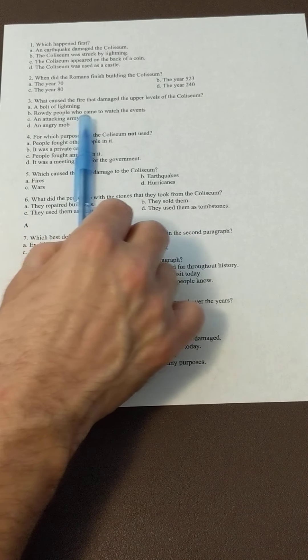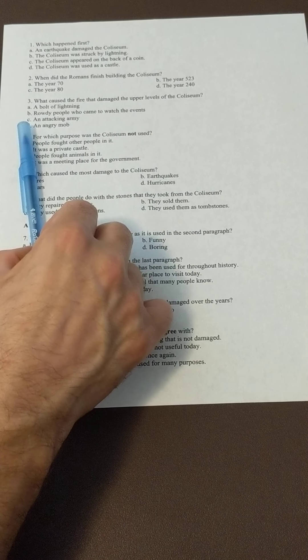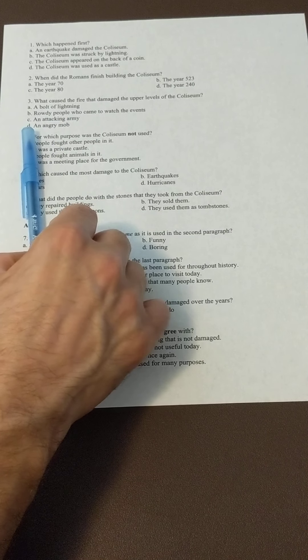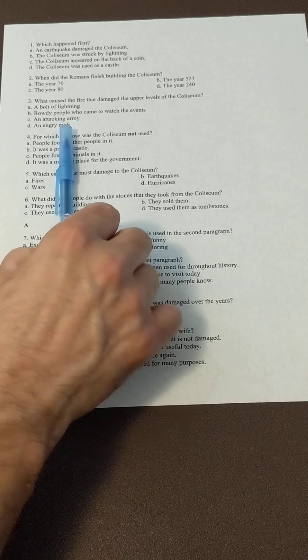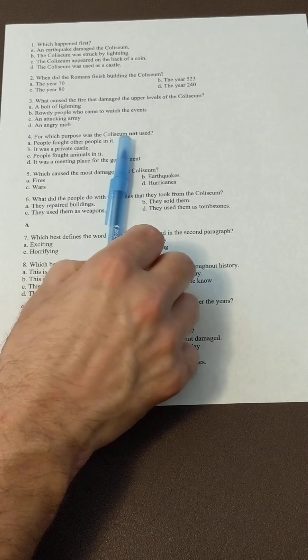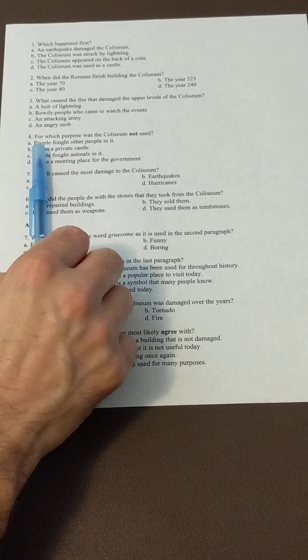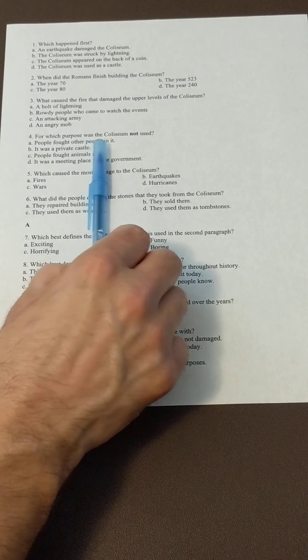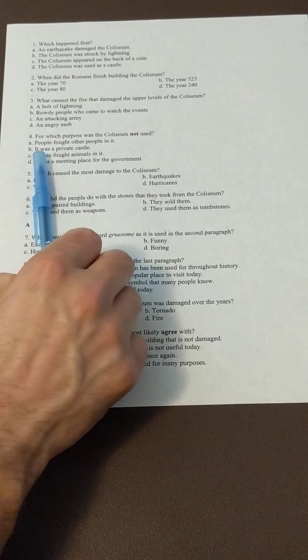B, rowdy people who came to watch the events; C, an attacking army; or D, an angry mob. Four: for which purpose was the Colosseum NOT used? A, people fought other people in it; B, it was a private